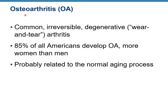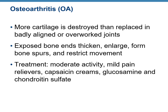Osteoarthritis, or OA, is a common irreversible degenerative arthritis, sometimes called wear and tear, and is probably related to the normal aging process. 85% of all Americans will develop OA, and it's more common in women than men. In OA, more cartilage is destroyed than replaced in badly aligned or overworked joints. Exposed bone thickens, enlarges, forms bone spurs, and restricts movement. Treatment includes moderate activity and pain relievers — either over-the-counter medication or something a physician prescribes.